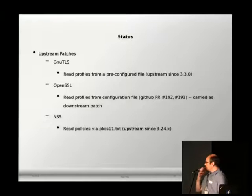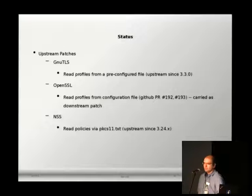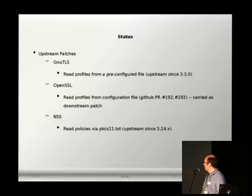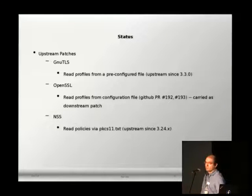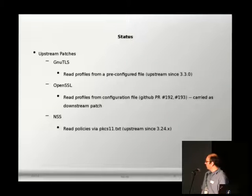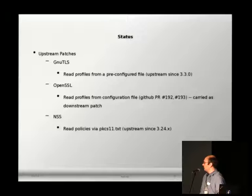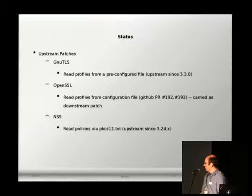We tried to involve upstream as little as possible, but couldn't avoid it entirely. We required some upstream patches for GNUTLS, which have been upstream since version 3.0. For OpenSSL, we opened pull requests on GitHub and discussed with developers, but the discussion is still ongoing after two years. For NSS, the patches we needed are already upstream, and they chose to set policies via a file called pkcs11.txt.